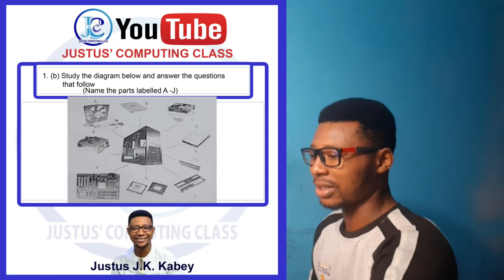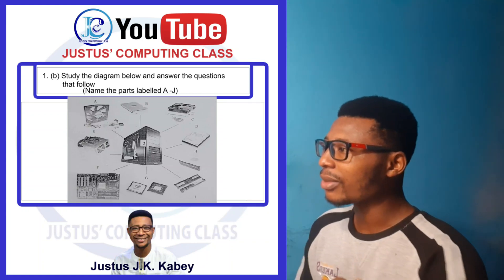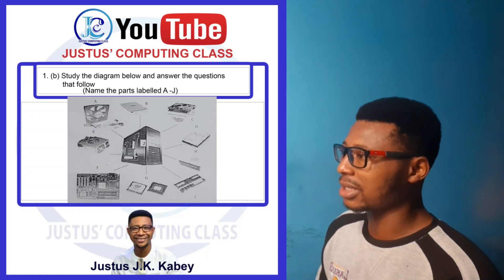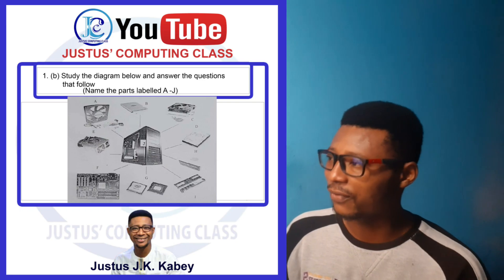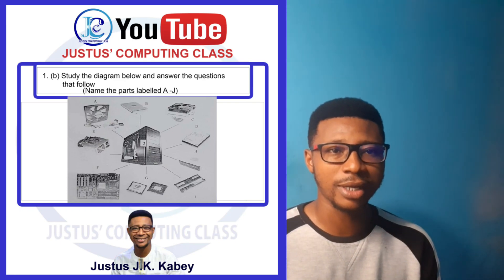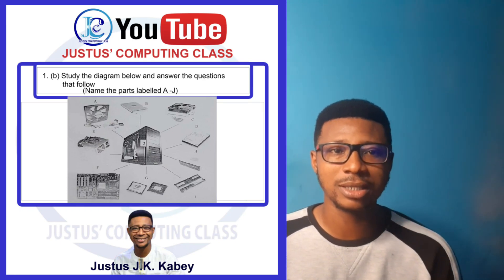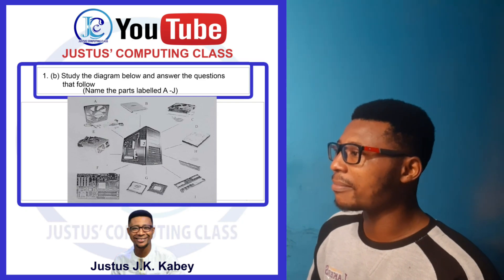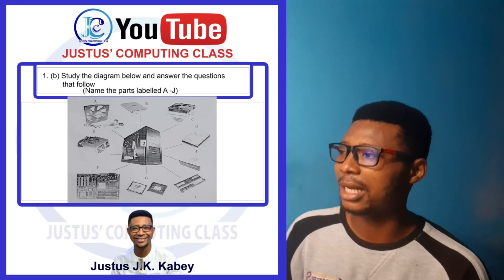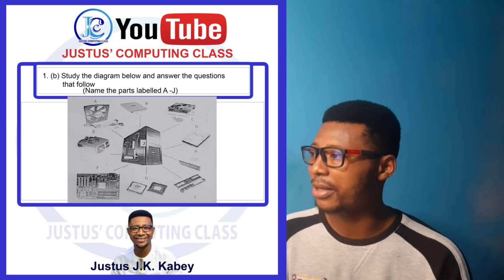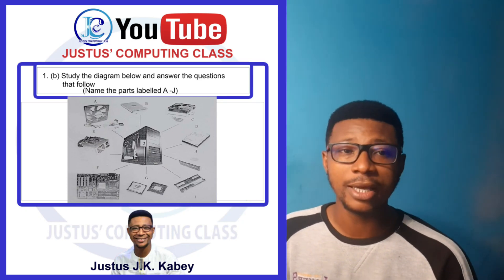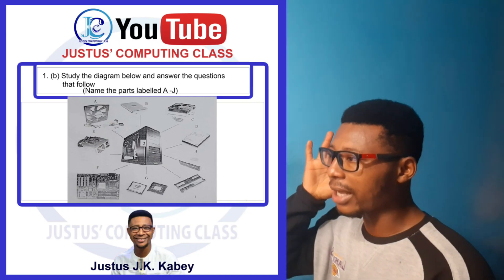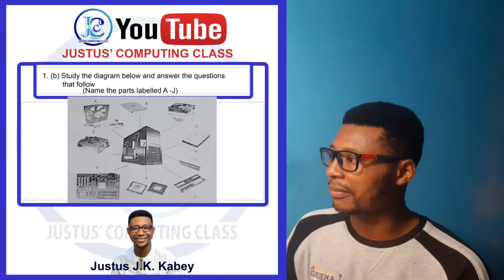The next question says: study the diagram below carefully and answer the questions that follow. The first question: name the parts labeled A to J. Part label A is the system fan.